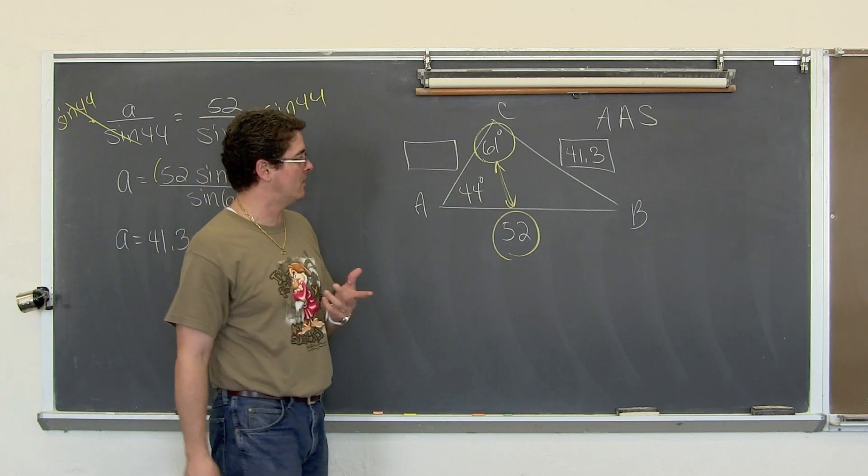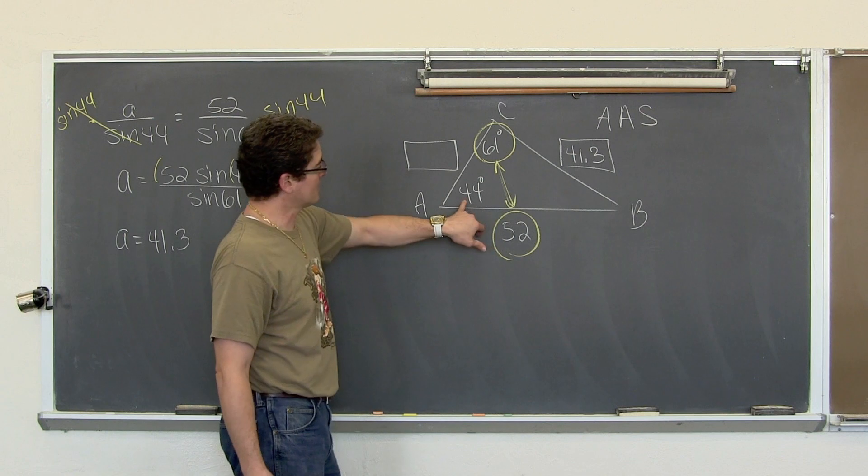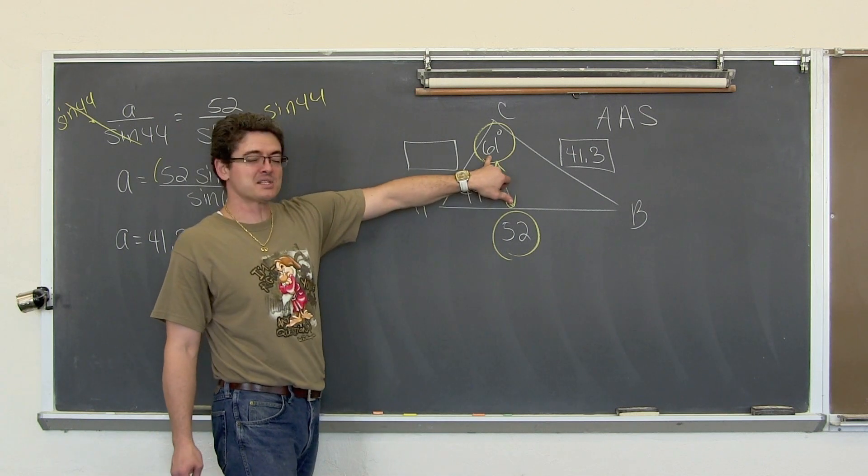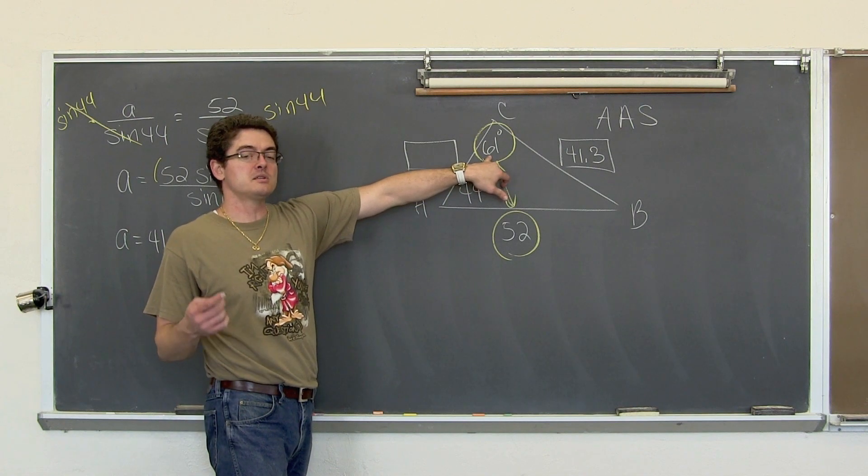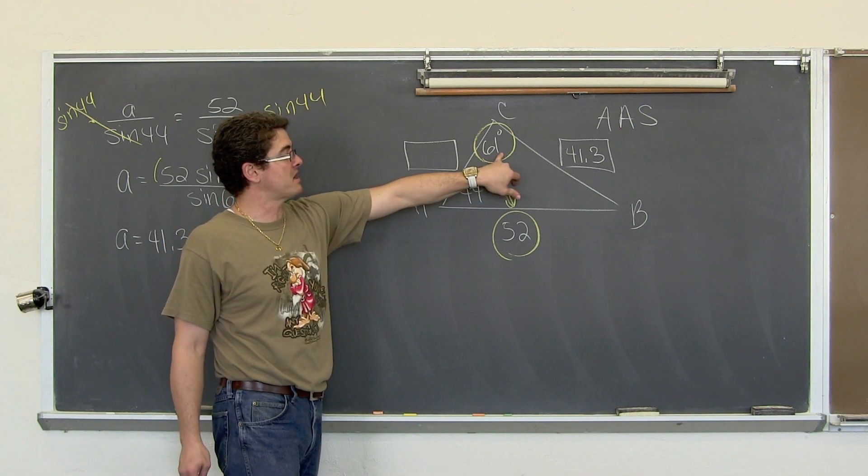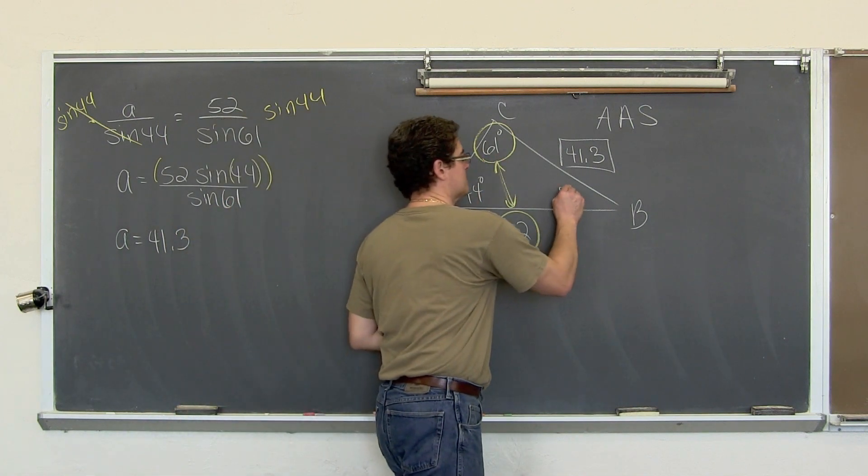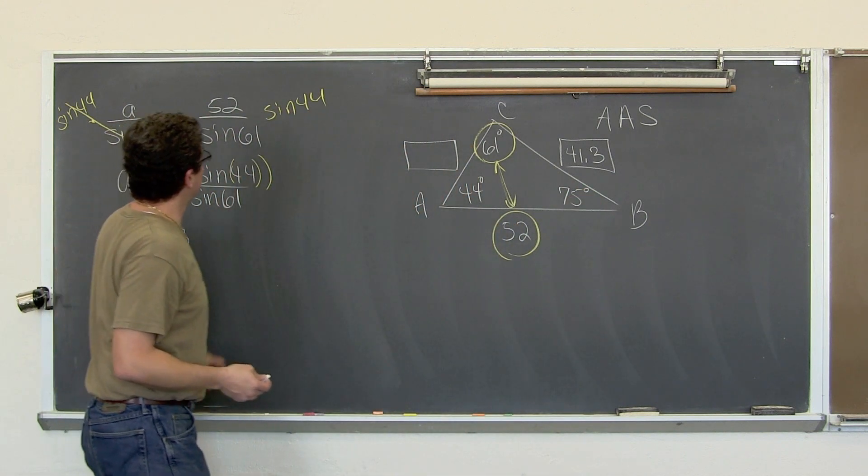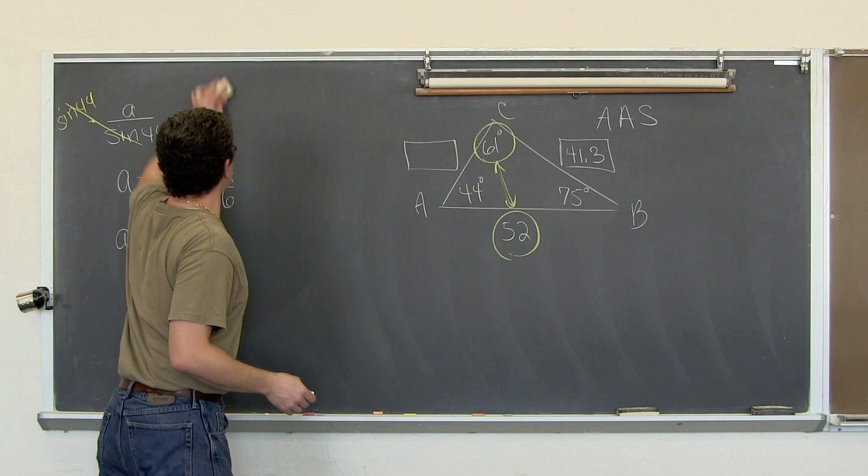To find side b, I have got a side and angle pairing, but I don't know this side and I don't know this angle. I can't do Law of Sines if I have both of those pieces missing, the angle and corresponding side. But there is 180 degrees inside of a triangle. We have 180 minus 44 is 136, minus 61 is 75 degrees.